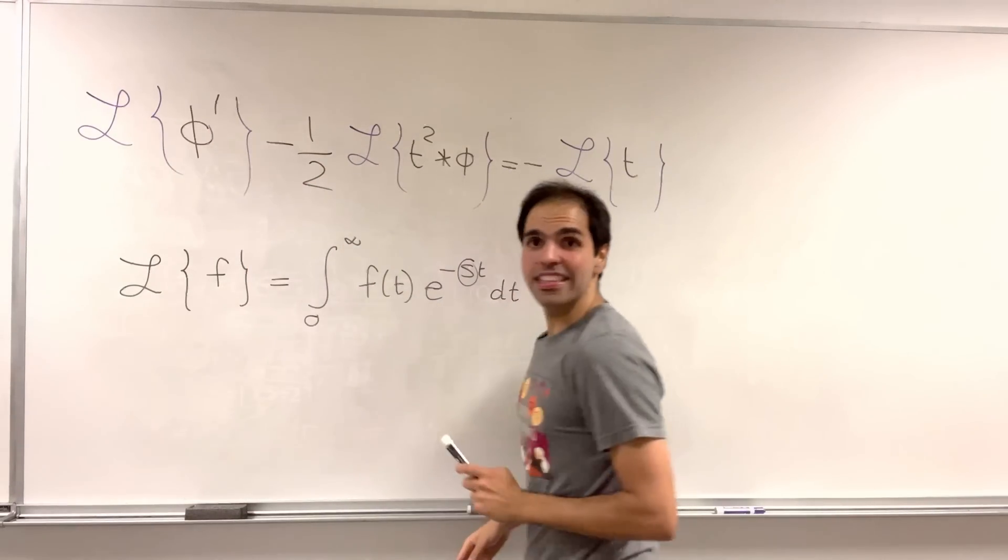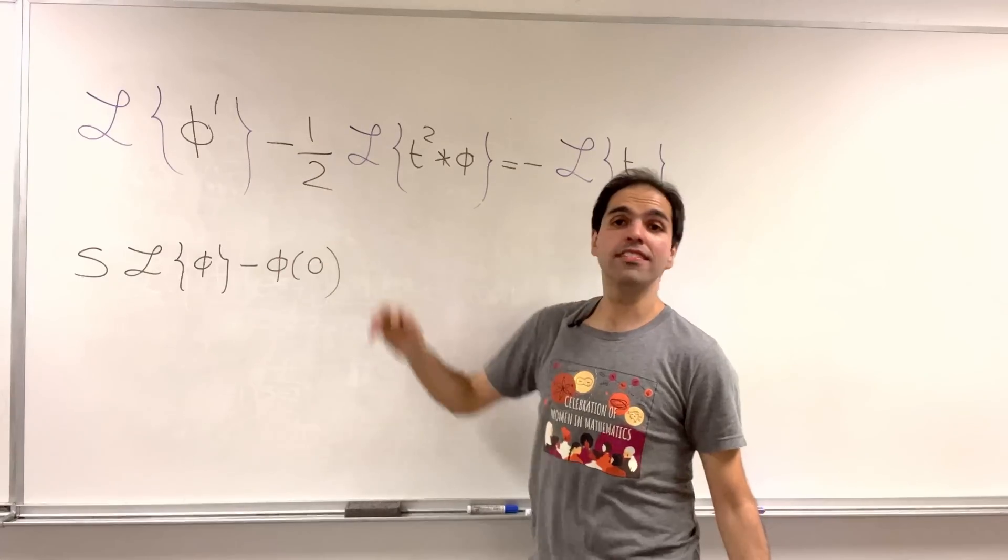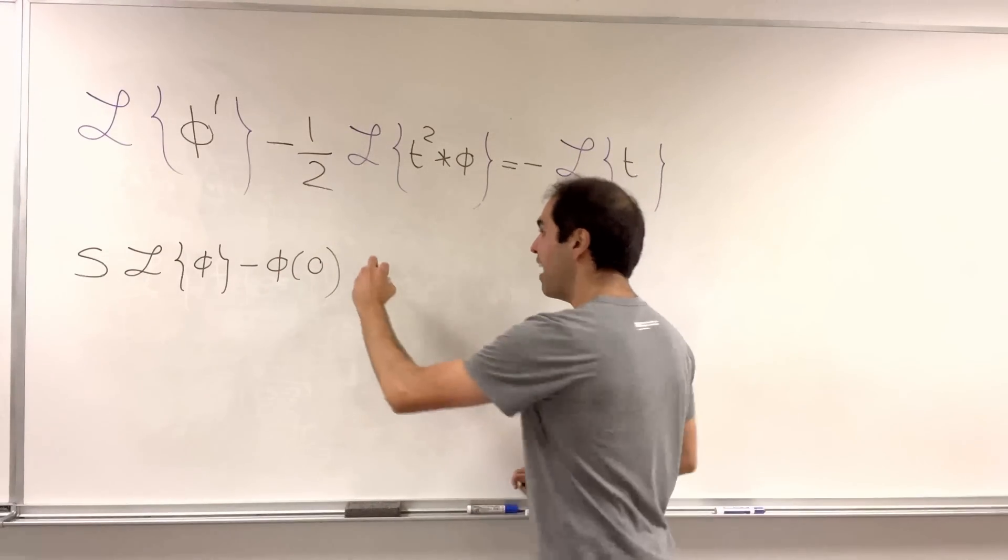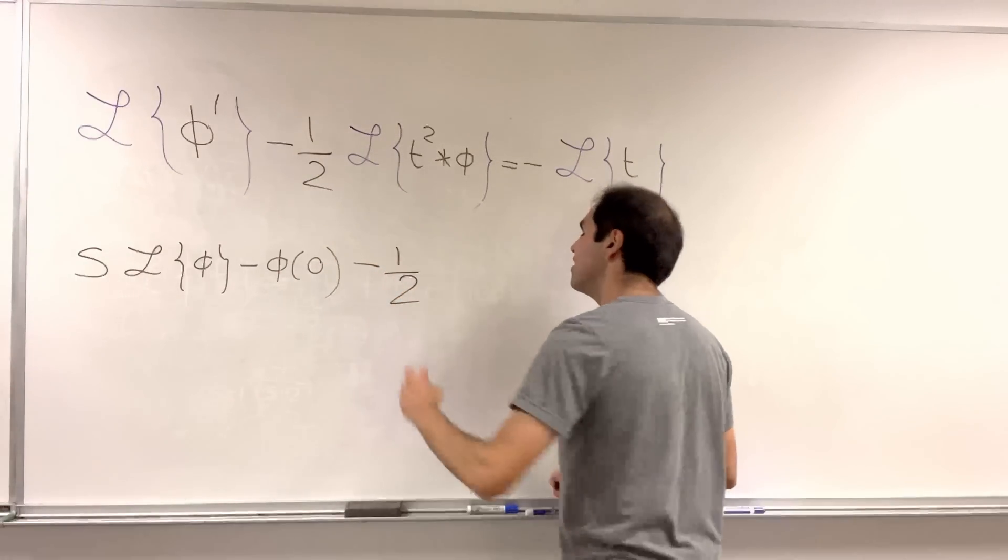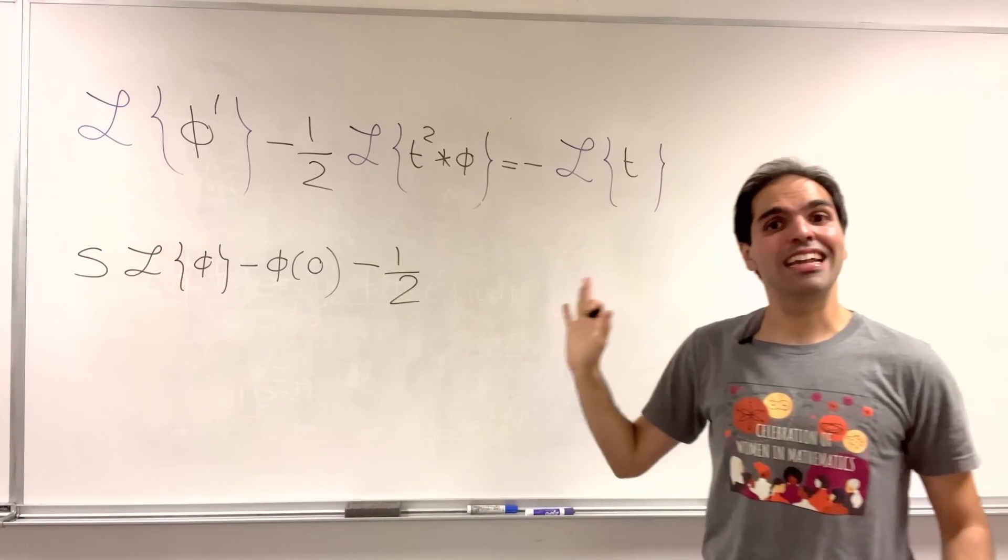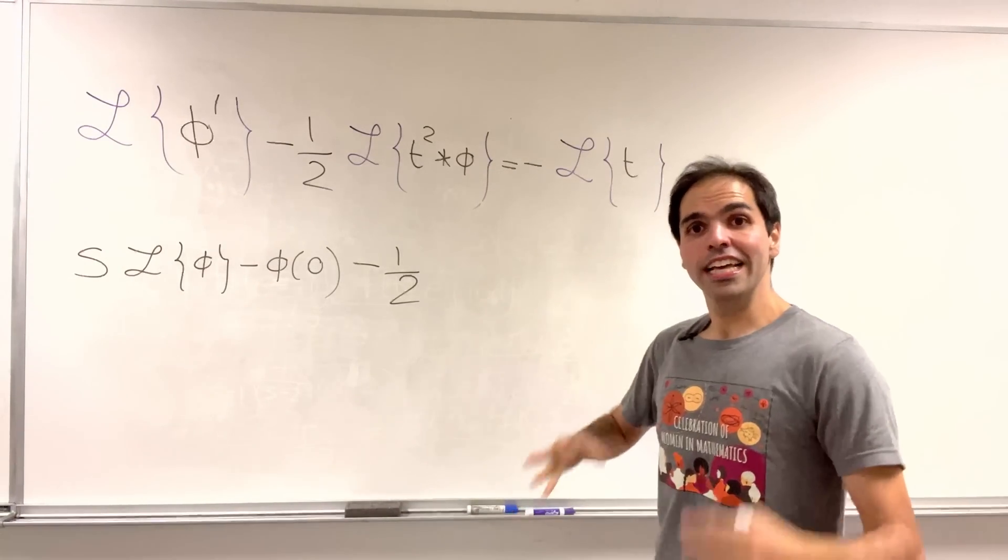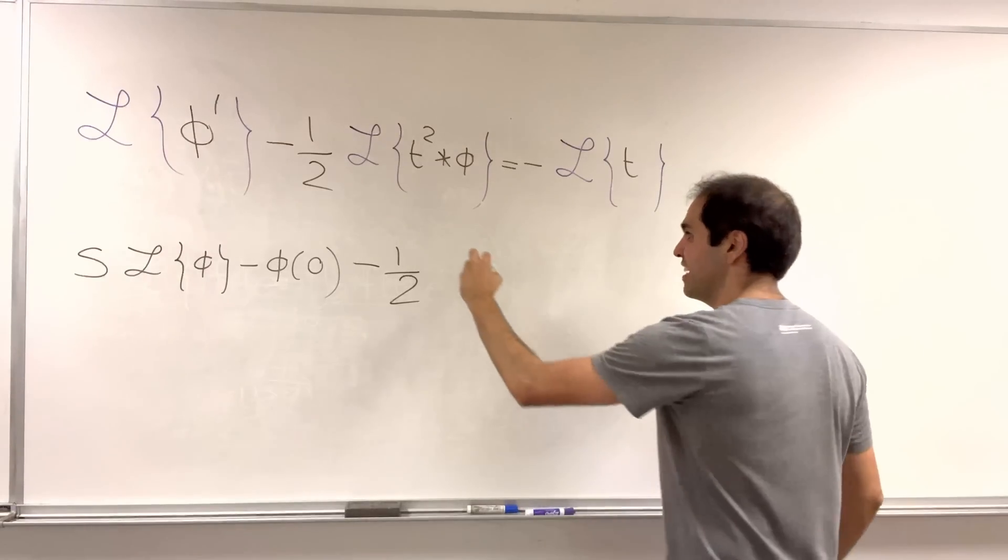So, in fact, this thing just becomes S L of phi minus the initial value minus one-half, another important property is that the Laplace transform transforms convolution into actual multiplication.